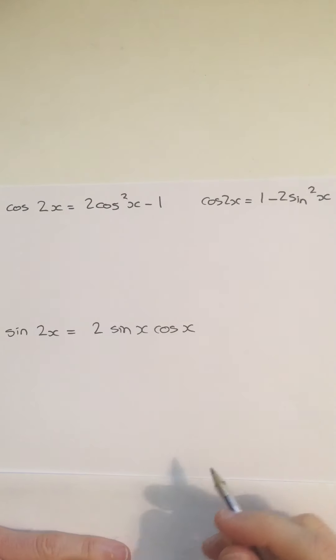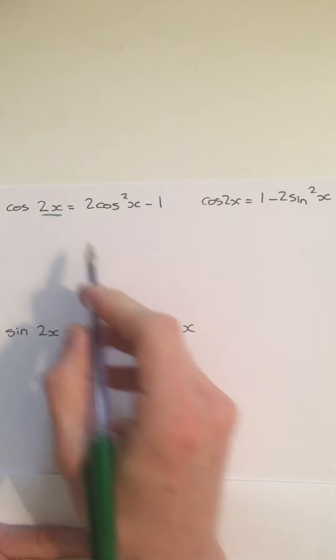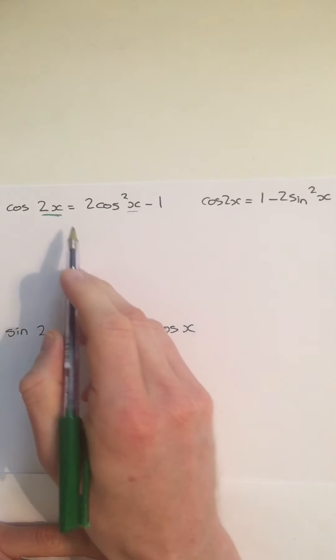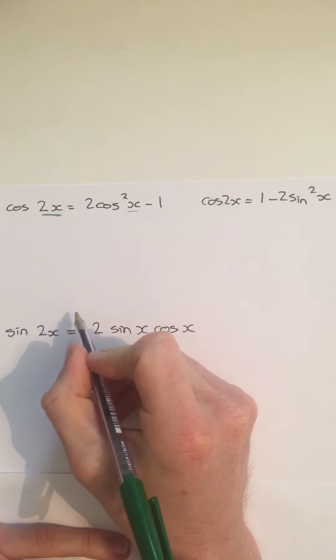This video is about how you can adjust the double angle formulae. You'll have seen these three formulae from the previous video, and we're going to adjust these formulae. The key thing here is noticing that the inside of the cos function is 2x, and the inside of the cos function there is x. As long as you keep these in proportion, you can adjust this formula.